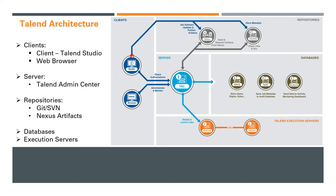The architecture diagram starts with Talend Open Studio. Since Open Studio is a free product, it comes only with the Open Studio part — none of the other components are included in the free product. This is where you will do the maximum of your work: develop your code, test it, and run it whenever you need it.